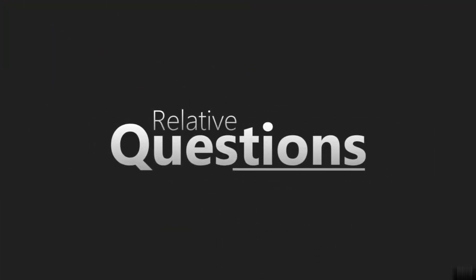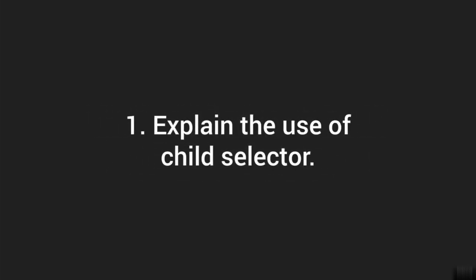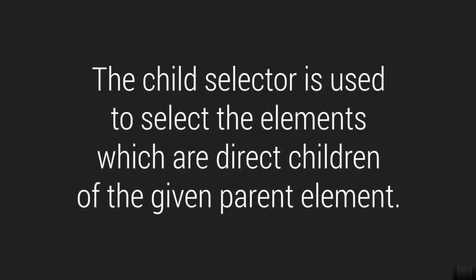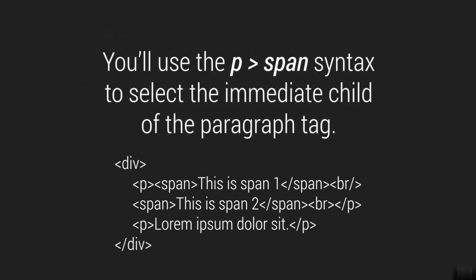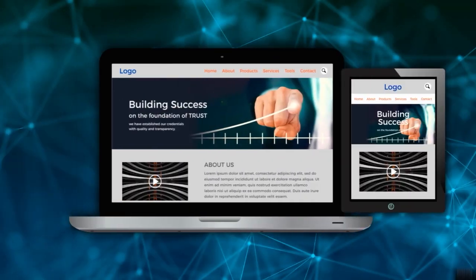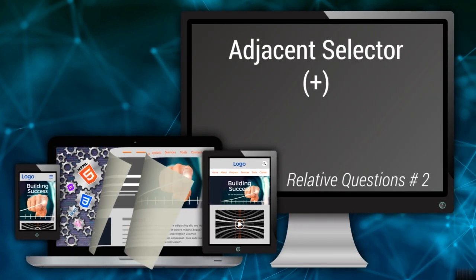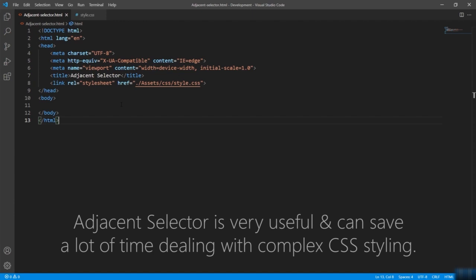The child selector is used to select the elements which are direct children of the given parent element. As an assignment: how will you select the immediate child of the paragraph in the given code? You will use the paragraph greater than span syntax to select the immediate child of the paragraph tag.